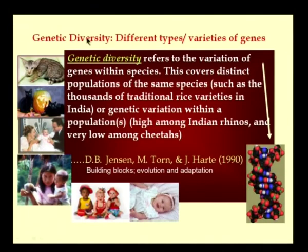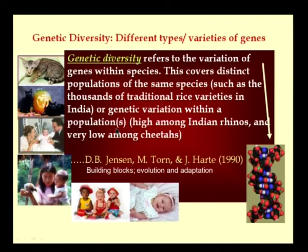Biodiversity equals genetic diversity plus ecosystem diversity plus species diversity. Genetic diversity refers to different types and varieties of genes, covering variation existing within a species — including distinct populations of the same species. India, for example, has thousands of traditional rice varieties. The scientific name of rice is Oryza sativa, but Oryza sativa has several varieties. For instance, in the Andaman Islands you find Oryza sativa variety andamanica, which is specific to the Andaman region.